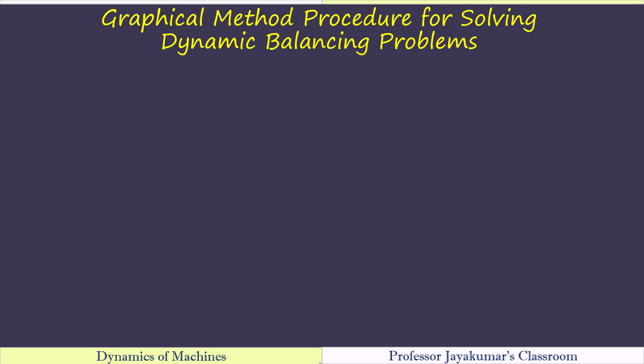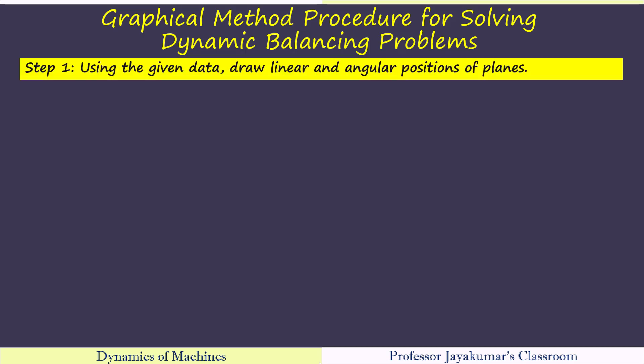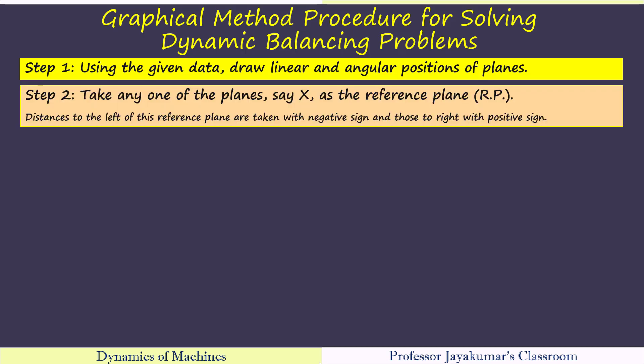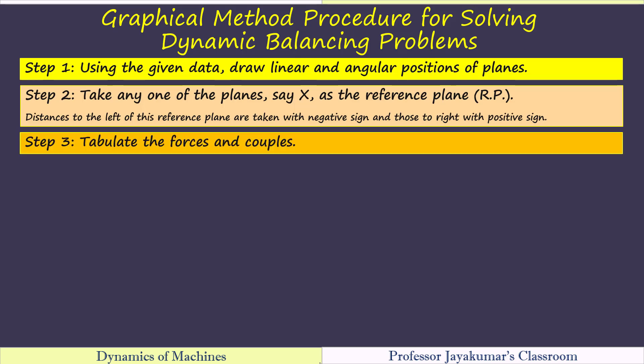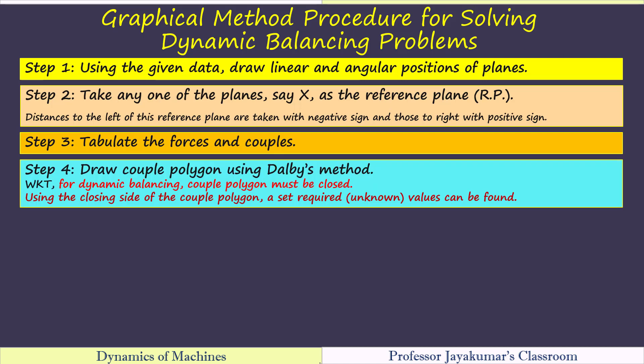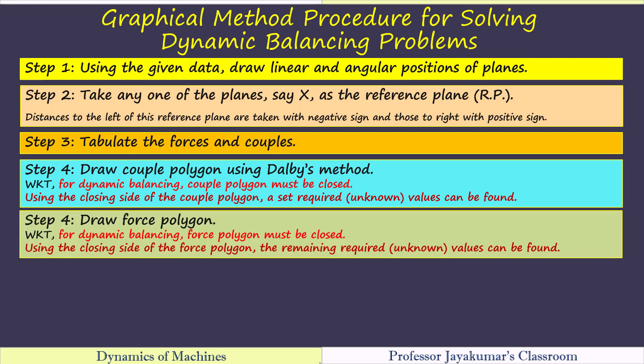For easy reference, let me list out the five step procedure that can be used for solving dynamic balancing problems. The first step is to draw the linear and angular position of the planes using the given data. Then we need to choose the reference plane. Then we have to tabulate all the forces and couples values. Using the tabulated values we have to draw the couple polygon and finally the force polygon. Using these two polygons we can determine the unknown values.